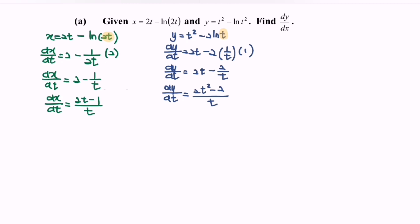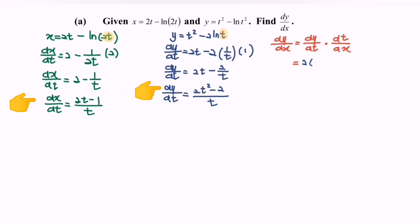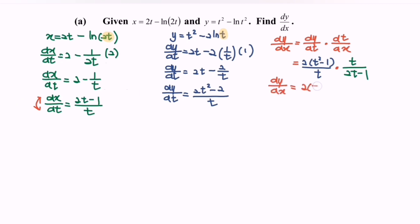Next, find dy/dx. The formula for dy/dx is dy/dt multiplied by dt/dx. We have dy/dt as 2(t squared minus 1) over t. Multiplied by dt/dx — remember, we flip dx/dt — it becomes t over (2t minus 1). So finally, dy/dx equals 2(t squared minus 1) over (2t minus 1).